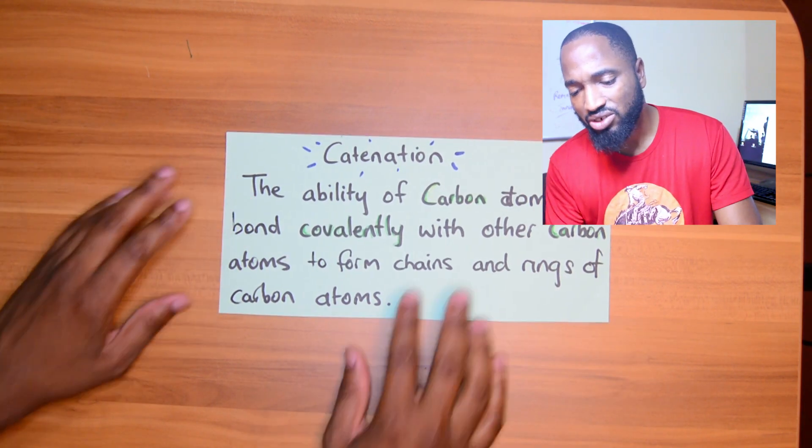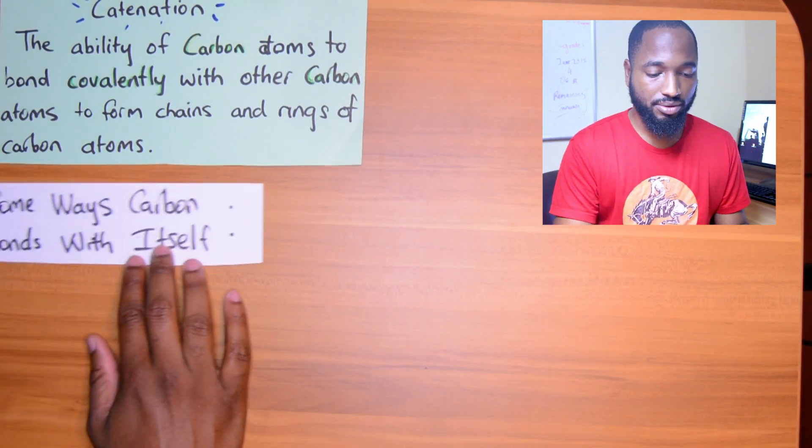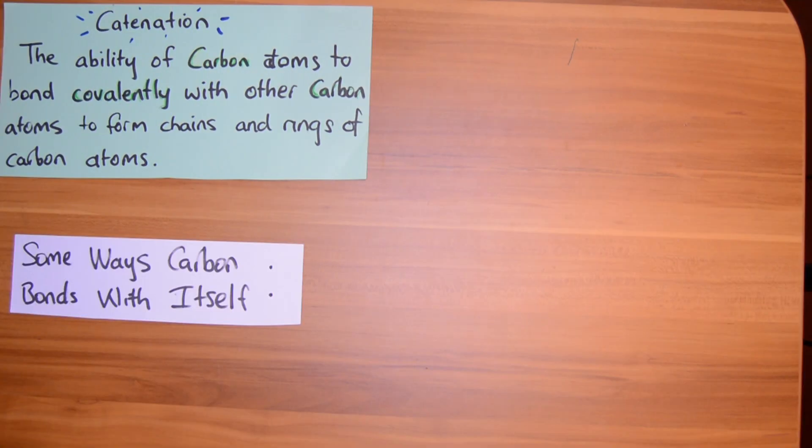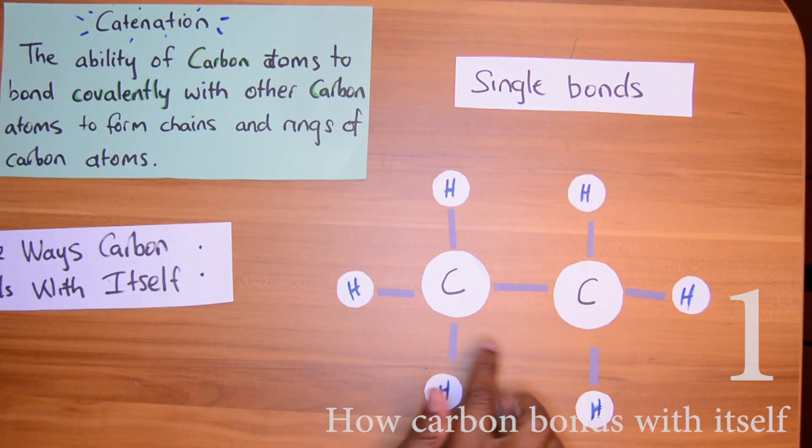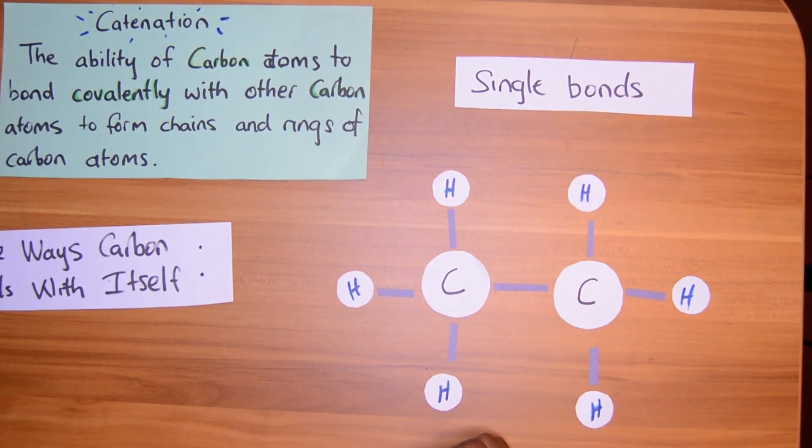Now for CXE you need to know some of the ways this can happen. So we can get single bonds. Notice how there is only one bond between the carbons in this molecule of ethane.